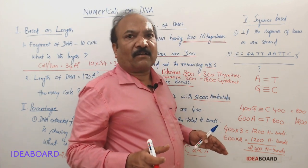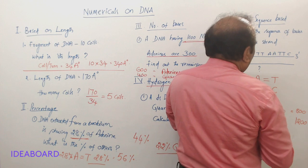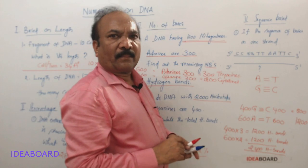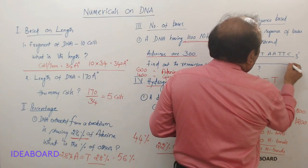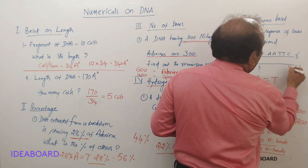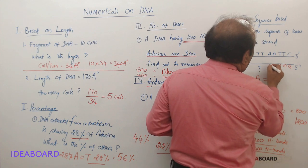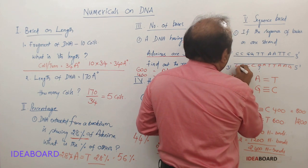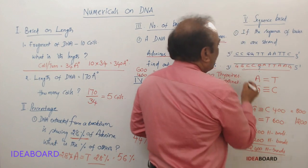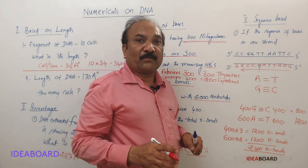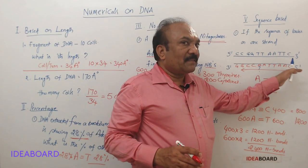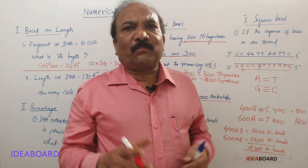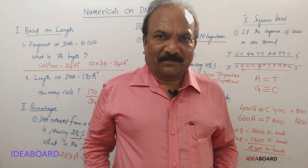We know that these two strands are not parallel, they're antiparallel, so first we have to write five prime here and three prime here. You see here C is there, so here comes G, A-T, T-A, A-T, C-G, C-G, G-C, G-C. So this is the sequence, and among the options, you have to select the option which is showing this direction—five prime to three prime direction. That is about the simple problems based on DNA structure.